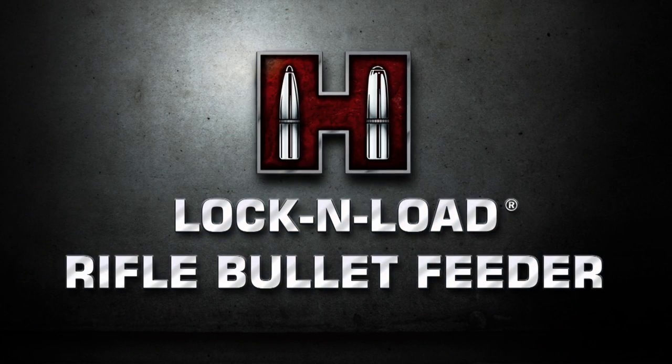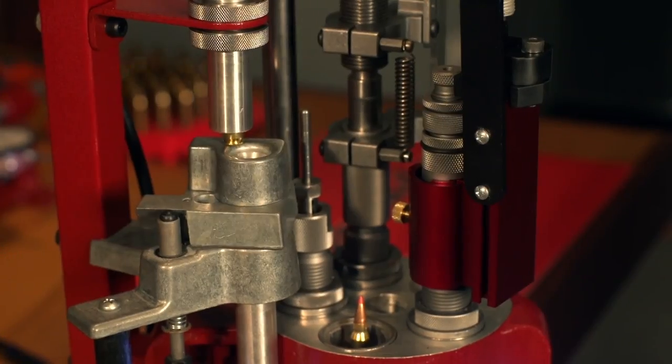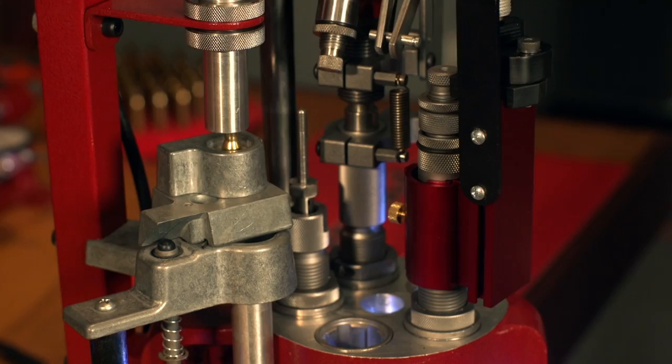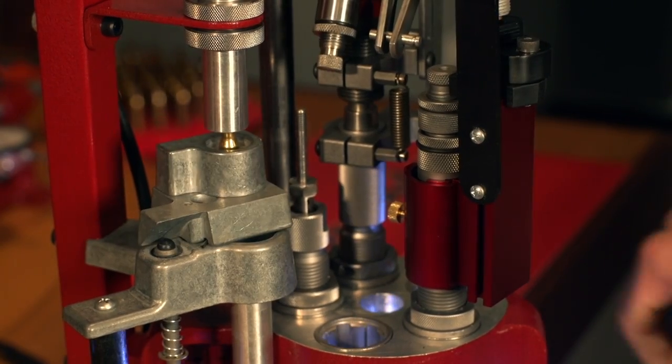The Lock and Load Rifle Bullet Feeder. Built from hard, anodized aluminum and housed around a hardened steel die body,